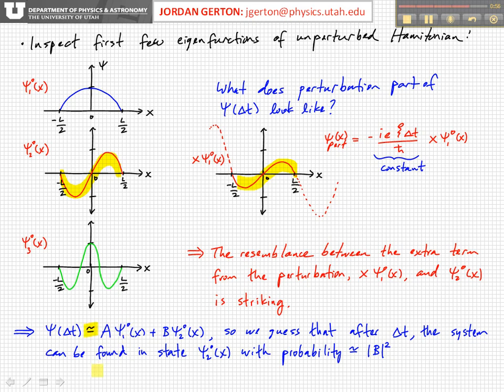So after a time delta t, after the perturbation is applied, the system can be found in state psi 2, the first excited state, with a probability that is approximately b squared, where b is just again the amplitude coefficient that we put in front of that first excited state.